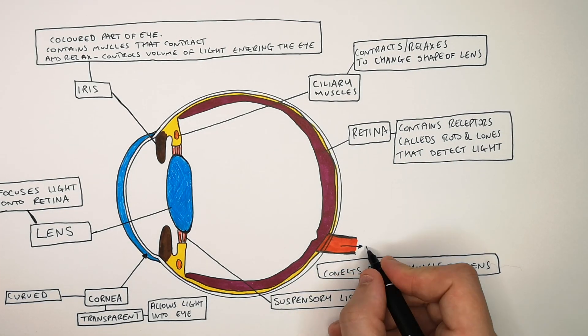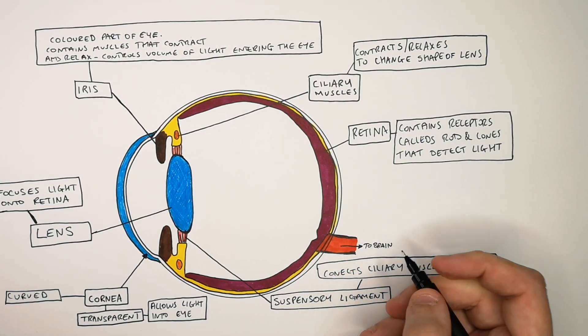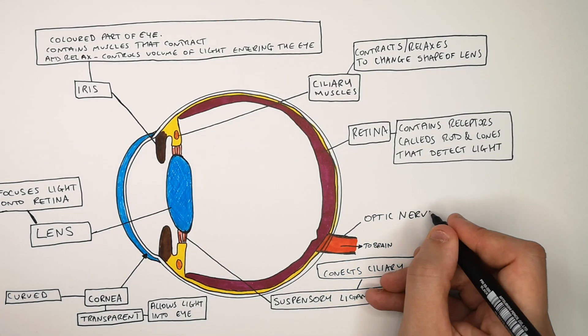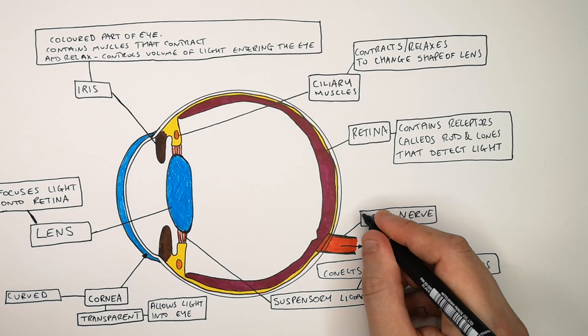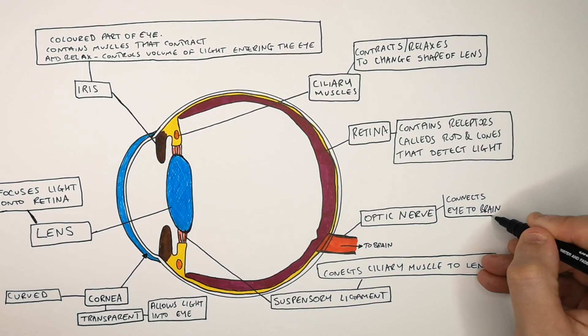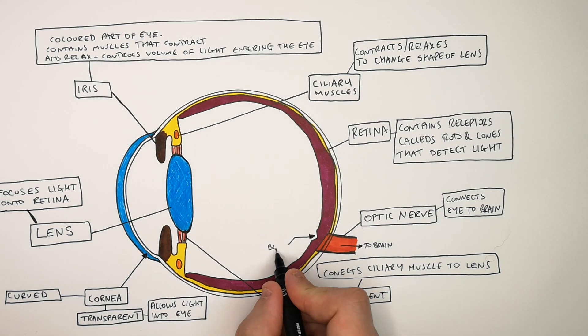The optic nerve is at the back of the eye and it takes the electrical impulses generated in the receptors to the brain so the brain can process the images that you see. So remember the optic nerve connects the eye to the brain. And this is your blind spot.